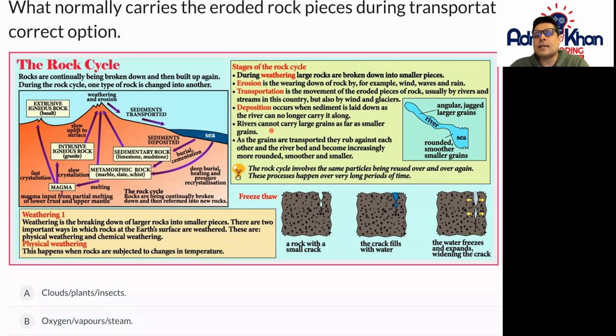As the grains are transported they rub against each other and the riverbed and become increasingly more rounded, smoother and smaller at the same time.